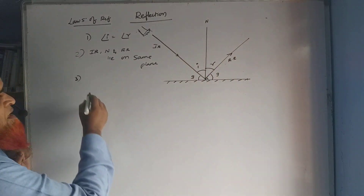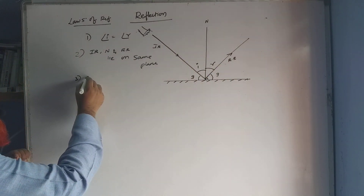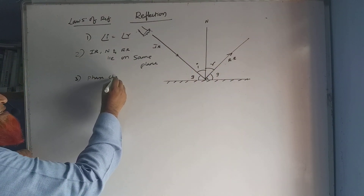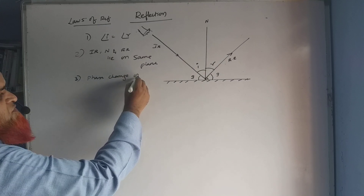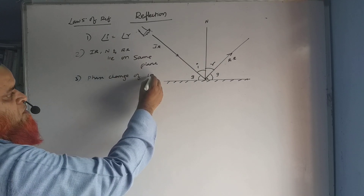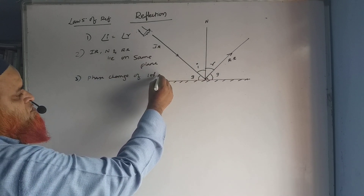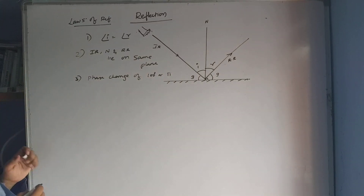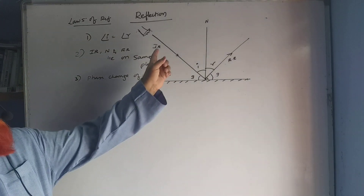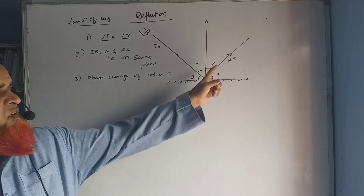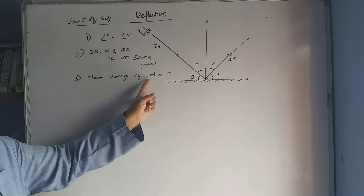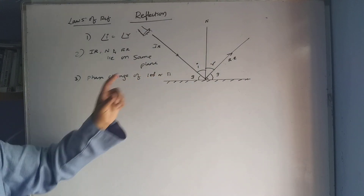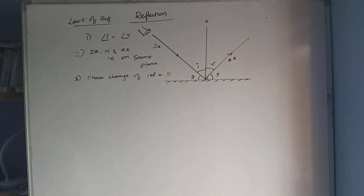The third point is that when a light ray suffers reflection, there is a phase change of 180 degrees, which can also be referred to as pi. Whenever light undergoes reflection, this phase change of 180 degrees always occurs.